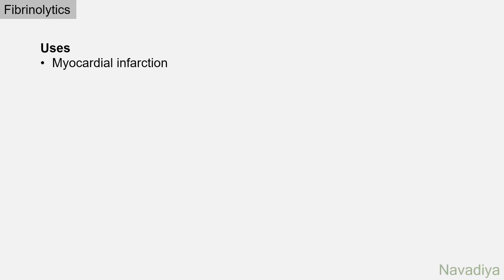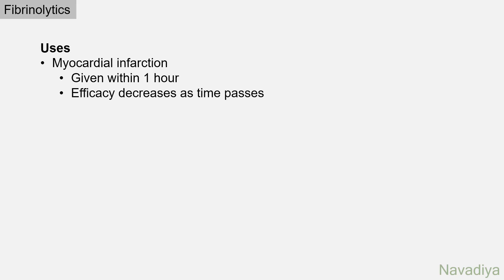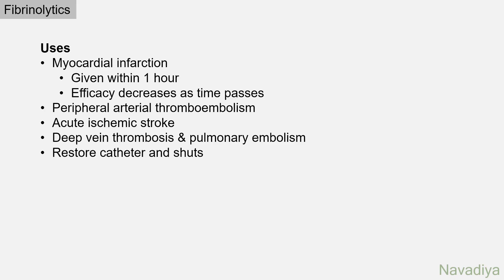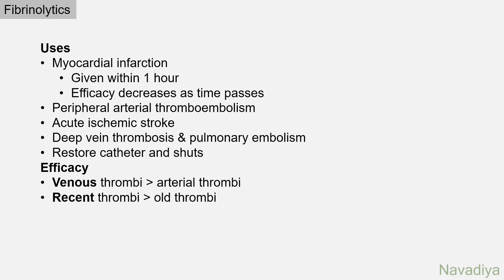The remaining points are common for all fibrinolytics. First, uses. Fibrinolytics are commonly used in myocardial infarction — if possible, they should be given within 1 hour, as efficacy decreases with time. They are also used in peripheral arterial thromboembolism, acute ischemic stroke, deep vein thrombosis, pulmonary embolism, and to restore catheters and shunts occluded by blood clot. In general, they are more effective on venous thrombi than arterial thrombi and on recent thrombi than older thrombi.